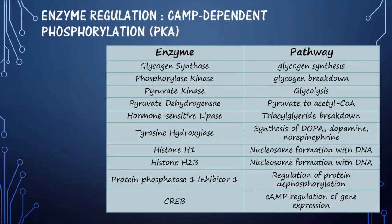For enzyme regulation, examples of cyclic AMP-dependent phosphorylation by PKA include glycogen synthase, pyruvate kinase, and pyruvate dehydrogenase — all of which you have already studied in metabolism.